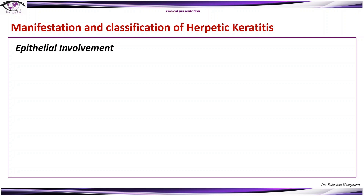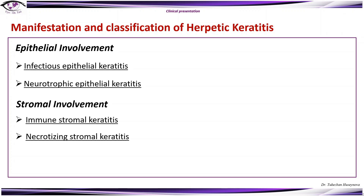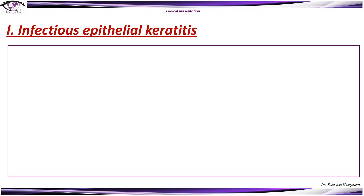Clinical presentation — manifestation and classification of herpetic keratitis includes epithelial involvement, which is characterized by infectious and neurotrophic epithelial keratitis. Stromal involvement includes immune stromal and necrotizing stromal keratitis. Endothelium involvement includes endothelitis.